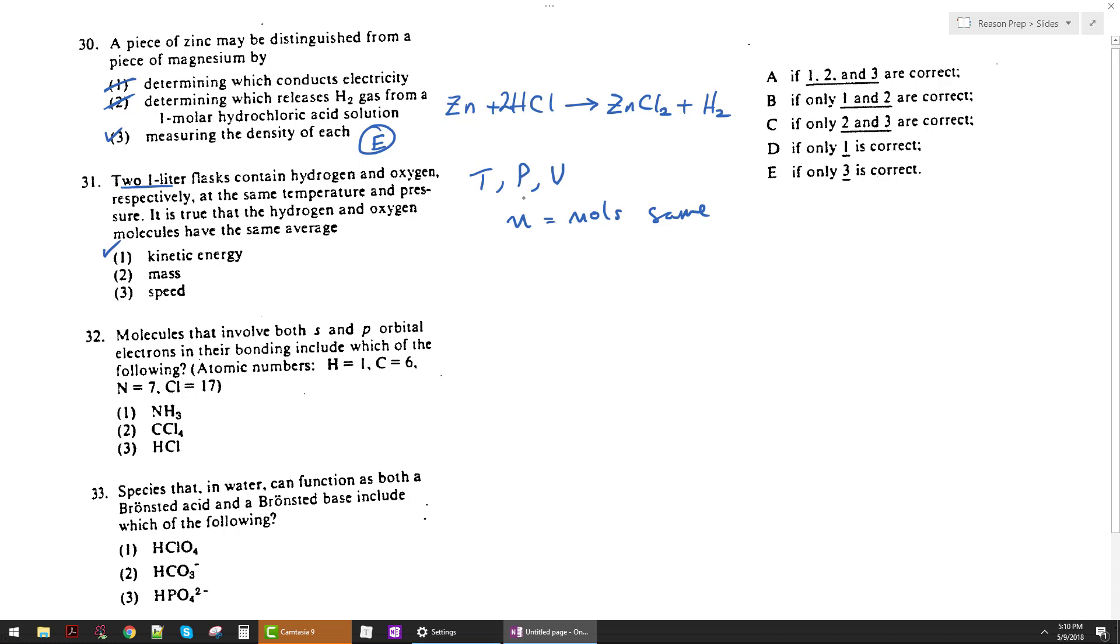Same mass? No. We know they've got the same moles. So let's say it's, I don't know exactly what it is, let's say it's one mole of each. We know they've got different molar masses. So if you've got one mole of hydrogen, one mole of oxygen, one is two grams, one is 32 grams, they definitely don't have the same mass.